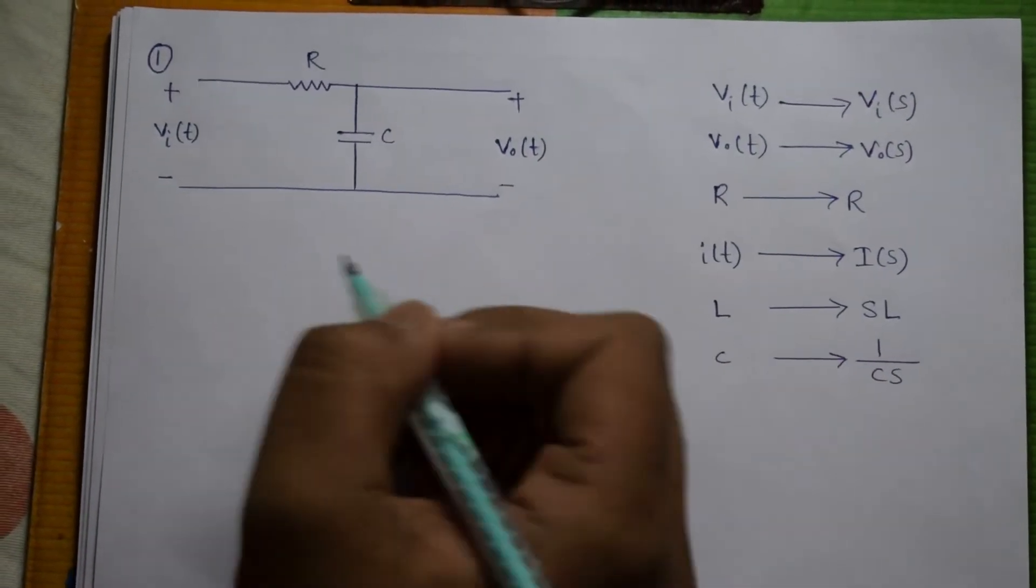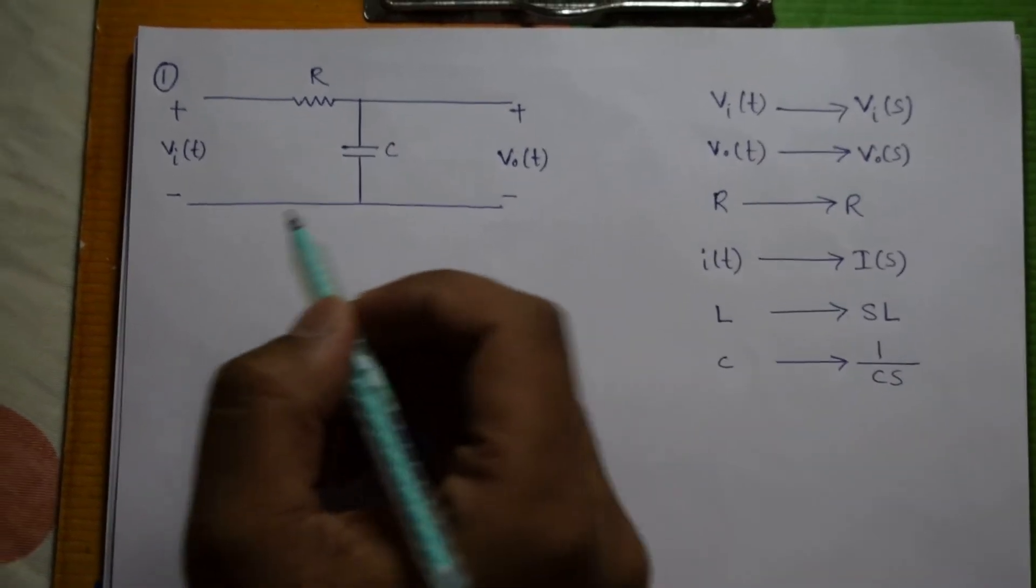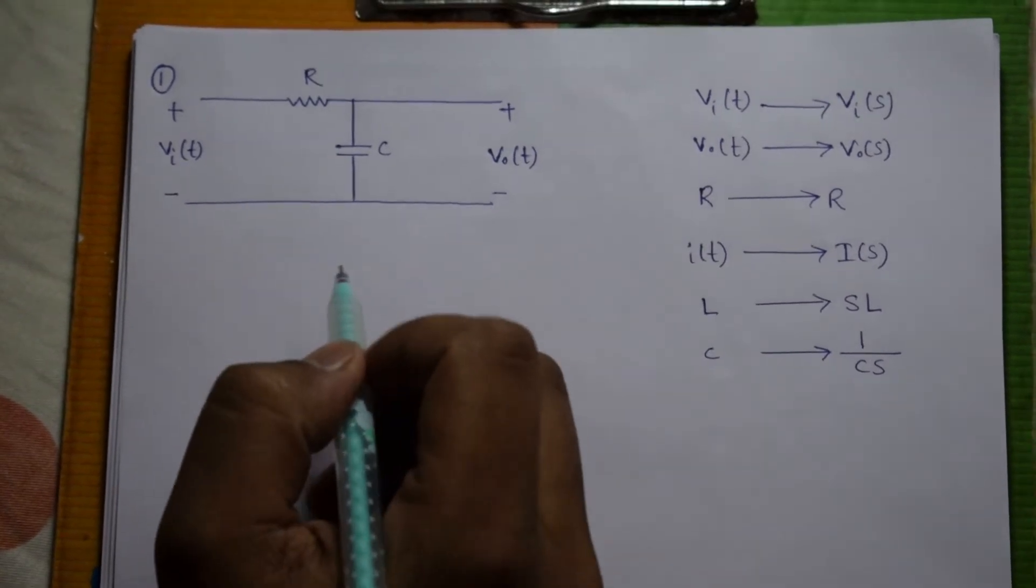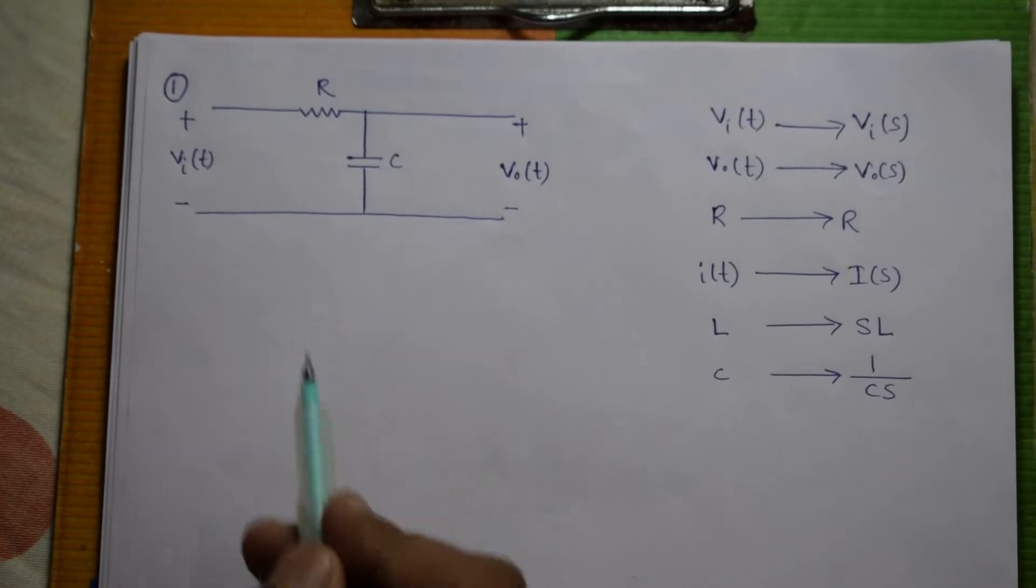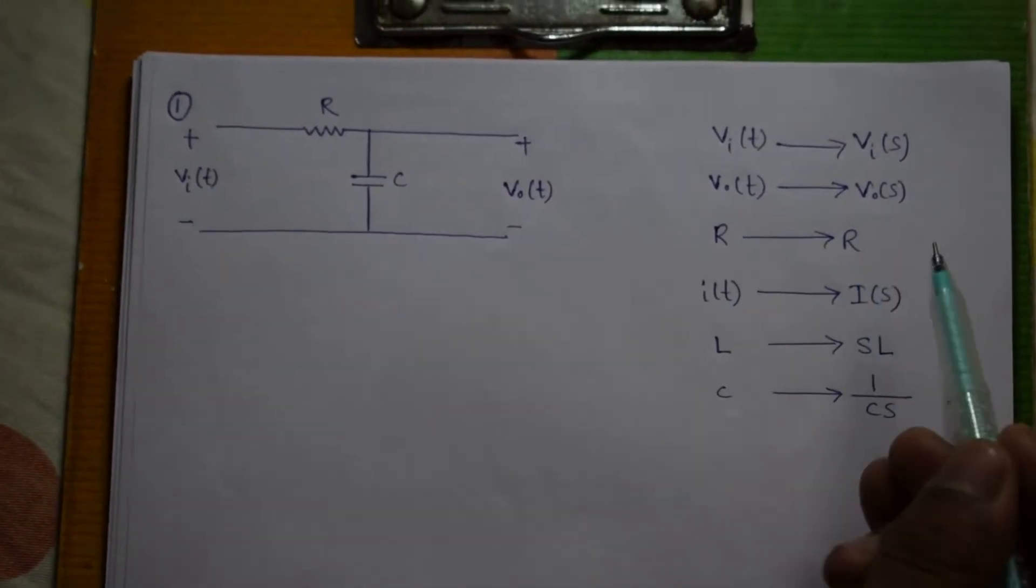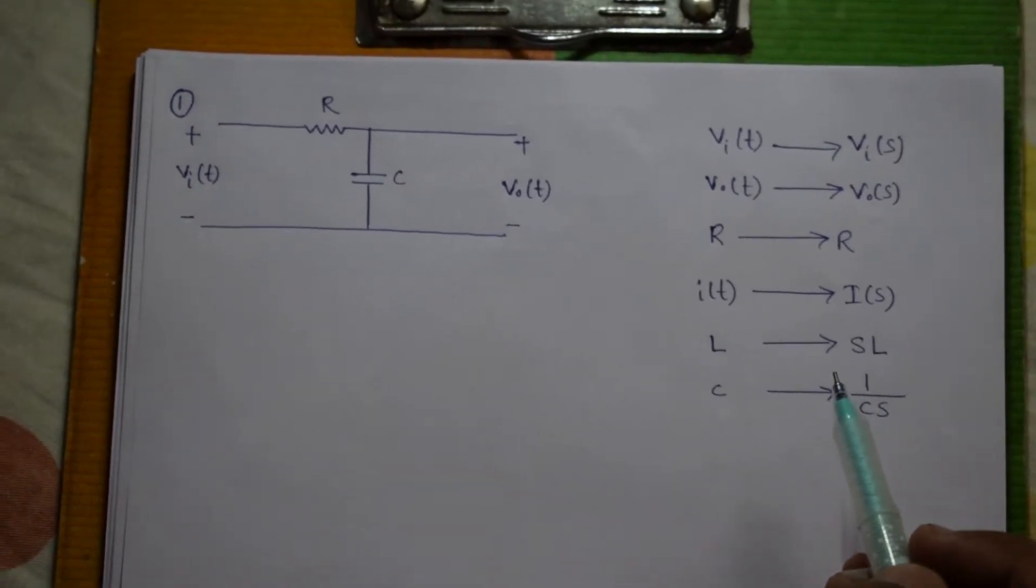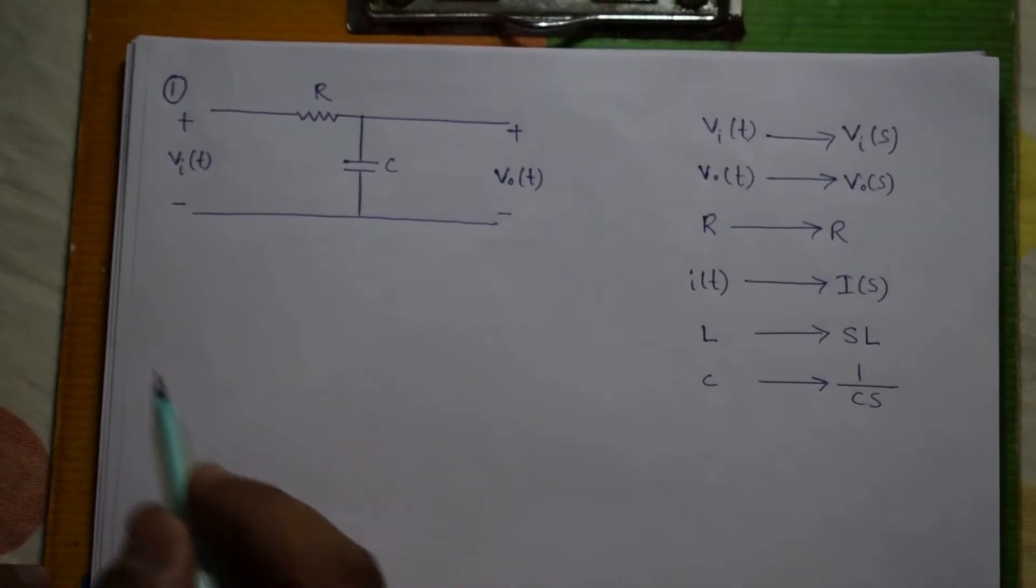It is a simple RC circuit. For finding the transfer function we need to apply KVL. We cannot do this in time domain since there are frequency dependent terms, therefore we need to convert them into impedances by doing Laplace transform. Here are some basics of Laplace transform which we will need.